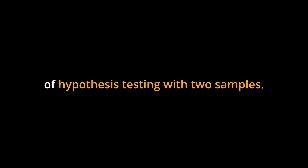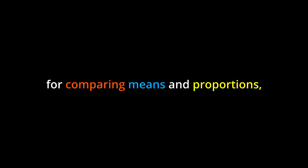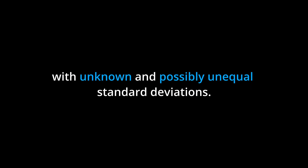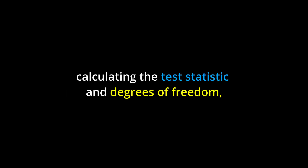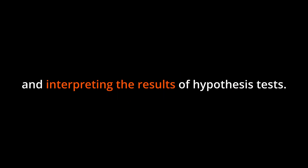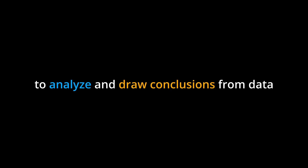Conclusion. Chapter 10 provides a comprehensive overview of hypothesis testing with two samples. It covers the different types of tests for comparing means and proportions, as well as the Aspen-Welch t-test for comparing independent means with unknown and possibly unequal standard deviations. The chapter emphasizes the importance of understanding the null and alternative hypotheses, calculating the test statistic and degrees of freedom, and interpreting the results of hypothesis tests. By mastering the concepts and techniques presented in this chapter, you will be equipped to analyze and draw conclusions from data involving two samples.